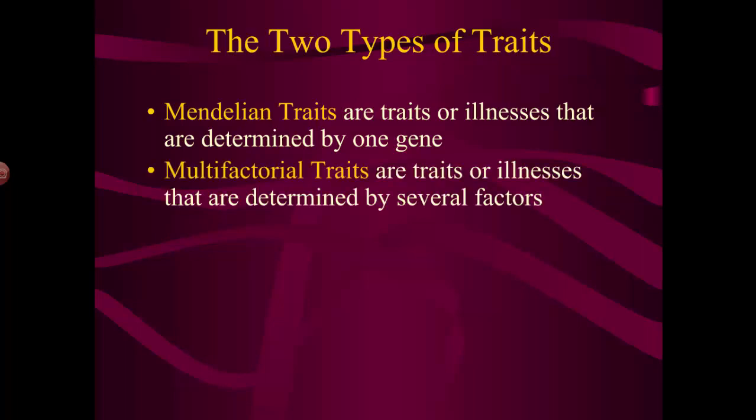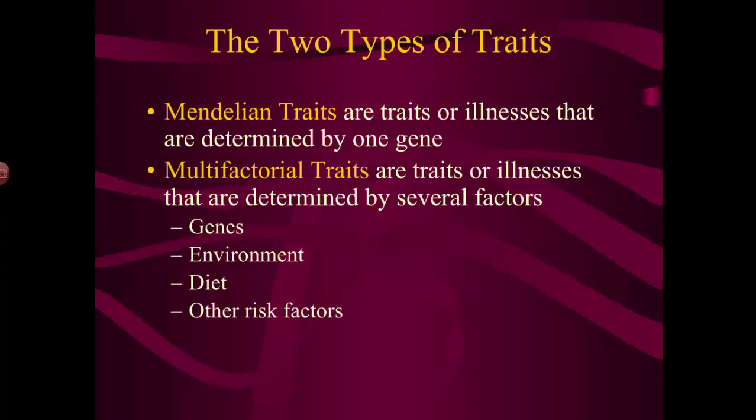It's the multifactorial traits that are the most common traits or illnesses. They're controlled, in some sense, by your genes, but also by your environment, by your diet perhaps, by other risk factors — exposure to dangerous chemicals, cigarette smoking, cancers, things like that. Cancer and other types of illnesses are multifactorial, so they're not as easy to understand, but they're way more prevalent and, therefore, more focused on in the medical field.